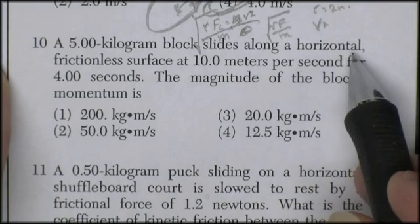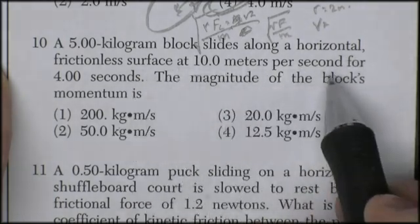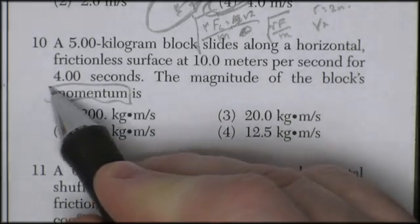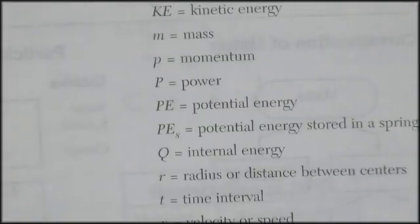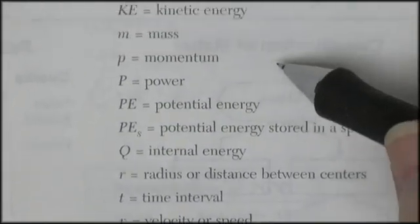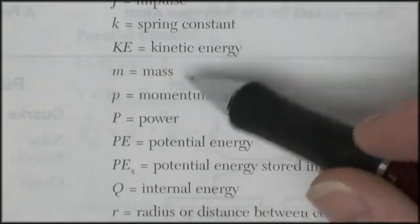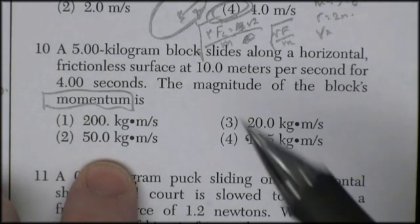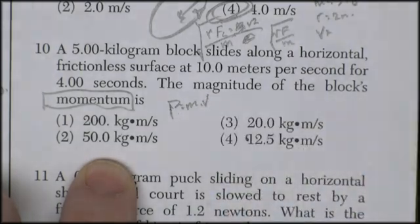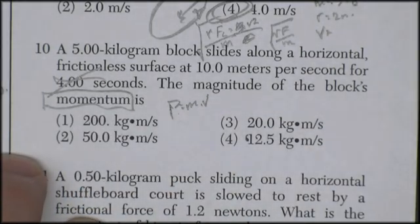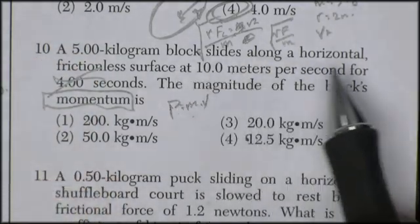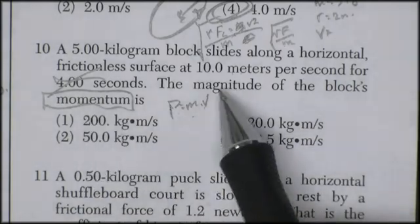Question 10. A 5 kilogram block slides across a horizontal frictionless surface at 10 meters per second for 4 seconds. The magnitude of the block's momentum. All right, what's the formula for momentum? I forget what momentum is. Let's see, it's little p. Big P is power. Little p is momentum. I'll find an equation over here. It's got a little p. Here we go. P is equal to mass times velocity. P is equal to mass times velocity. We don't care about the 4 seconds. 5 kilograms is the mass. 10 meters per second's velocity. 50 kilogram meter per second should be the momentum. 5 times 10, 50.